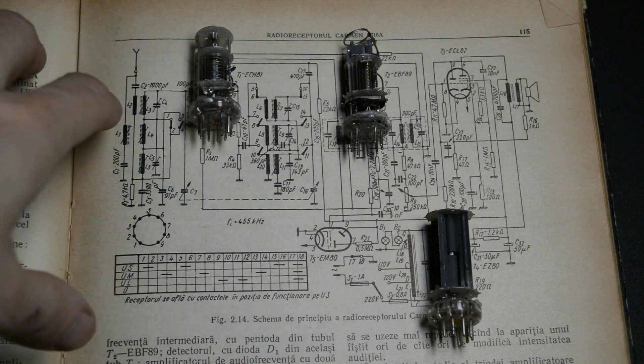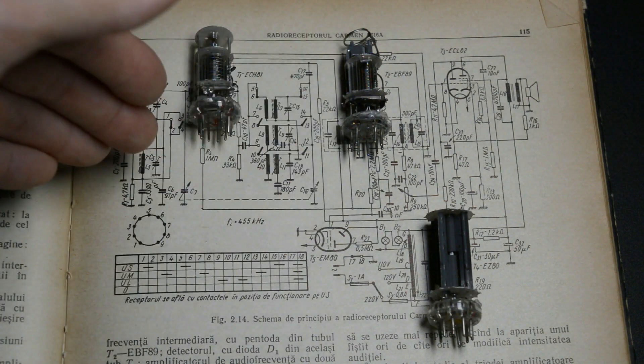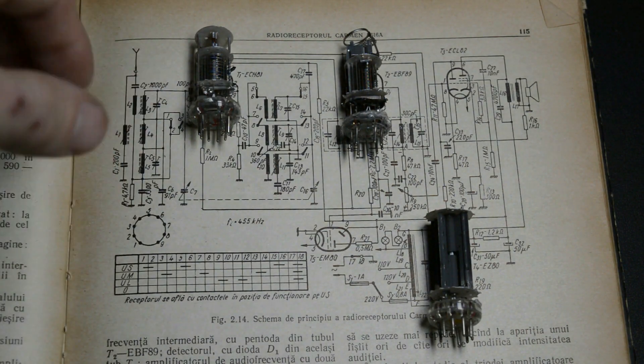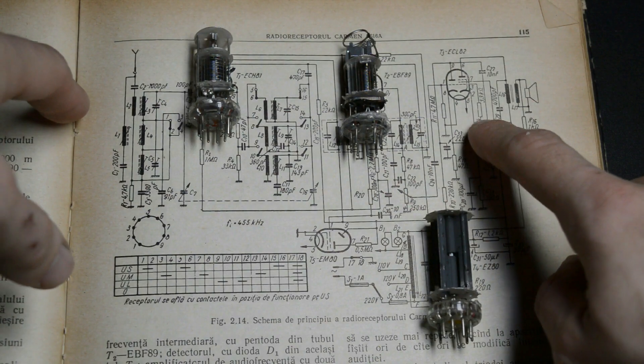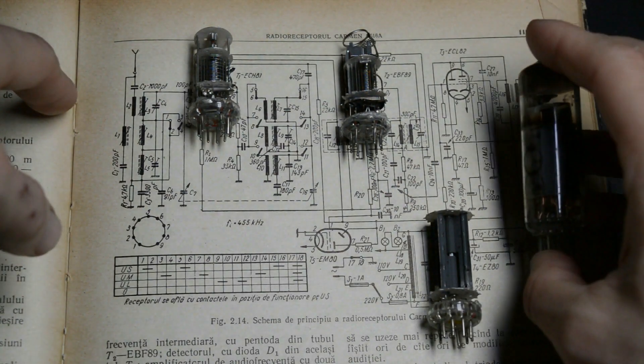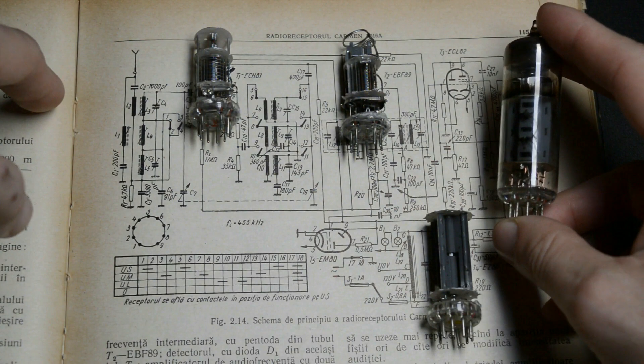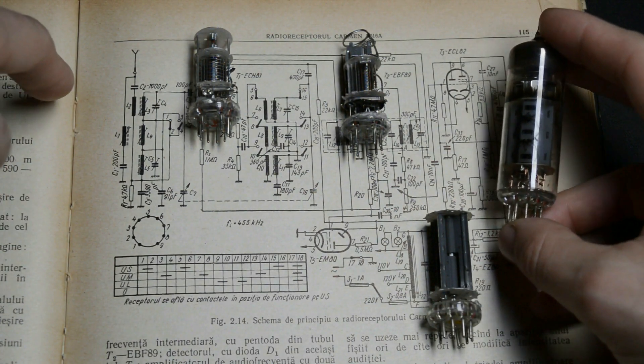The teardowns are progressing nicely, already got three of the tubes done, and today it's time for the last tube in the signal path, the ECL-82, or its Russian cousin that I've got right here, the 6F-3P, Triode Beam Tetrode Vacuum Tube.